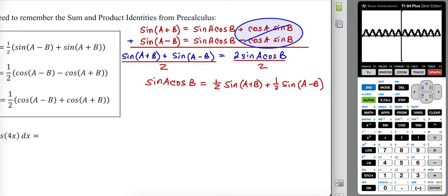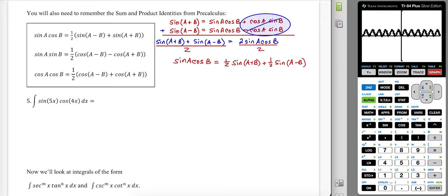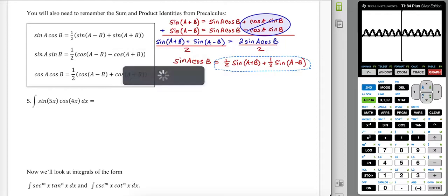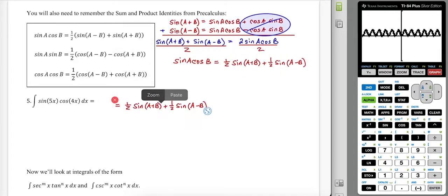Sine a cosine b equals one half sine of a plus b plus one half sine of a minus b. Or you could represent it the way it's given in the chart here with the one half as a multiplier. I'll just tuck in this variation of it.